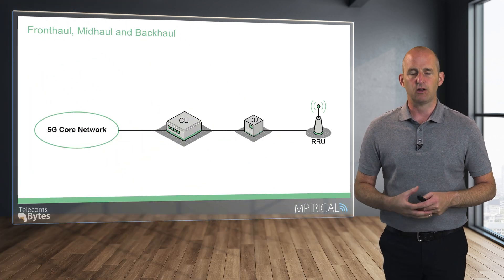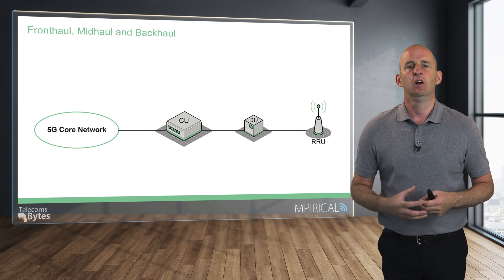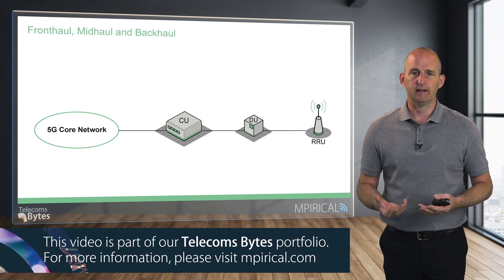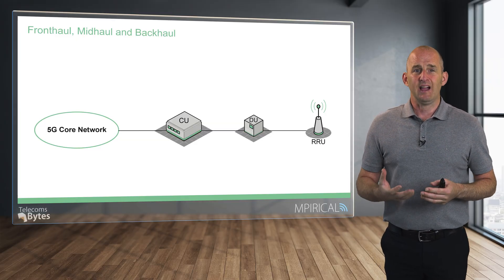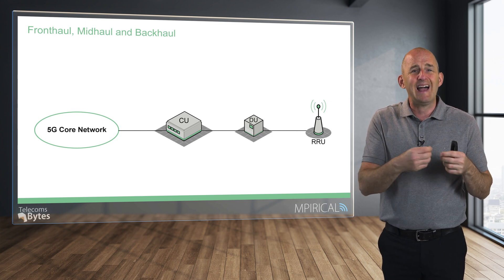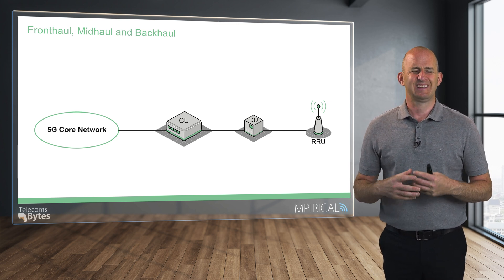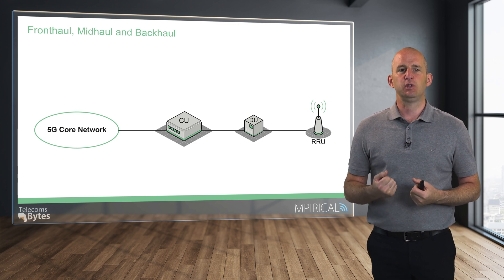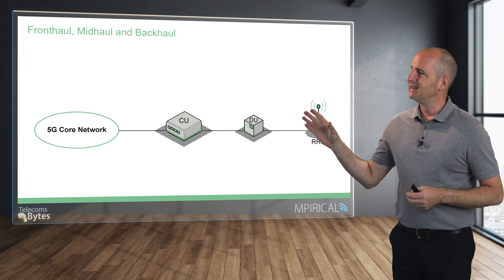Front hall, mid hall and back hall is terminology which relates to the architecture of the radio access network and it can apply to 5G or indeed 4G. It actually directly relates to the transport network — the way in which we shift packets of data around the network. You'll only see the explicit front hall, mid hall and back hall elements of the transport network if you've deployed your radio access network in a centralised solution, and what that means is we take the eNodeB or the gNB and we break it down into functional elements.